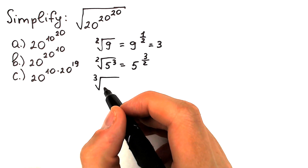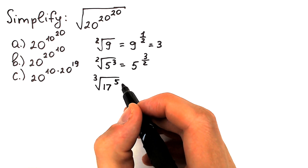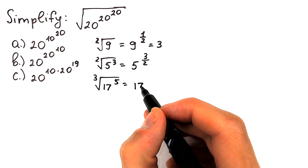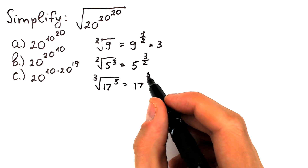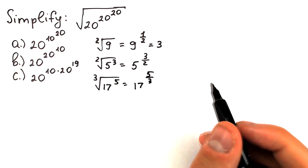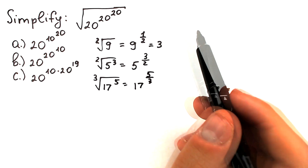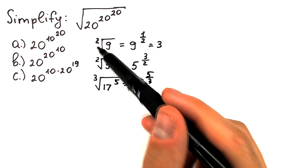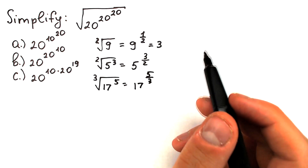Here's another case: the cube root of 17 to the power 5. We can write it as 17 to the power 5 over 3, using the same logic. If you look closely, this implies that we always divide by the power of our root — this is the key moment.